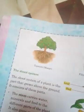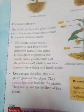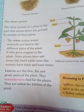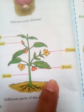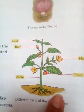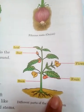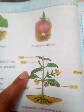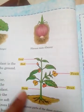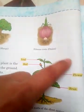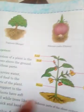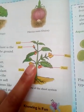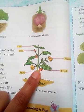What is the shoot system? In the previous video I talked about the root system. Now let's talk about the shoot system. Inside the soil the root parts are called the root system, and above the soil — the parts that contain the stem, leaf, bud, flower, and fruit — all these parts are called the shoot system.